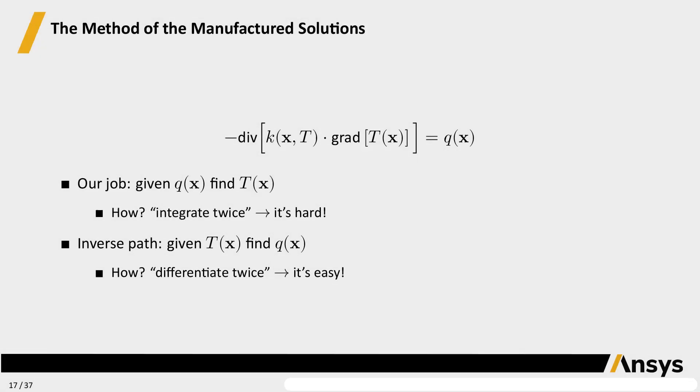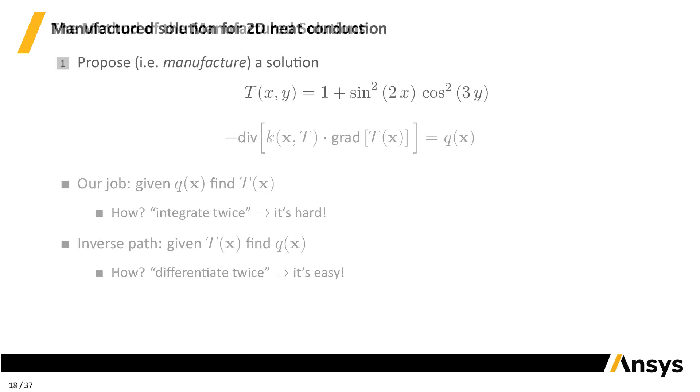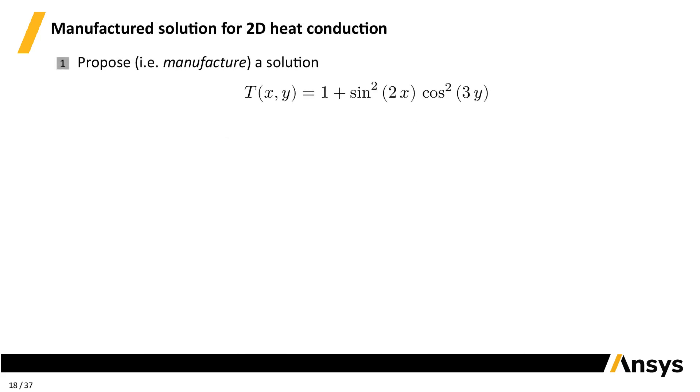But we can take the inverse path: start with a known temperature distribution and find out which source and boundary conditions we need to give rise to that manufactured solution we started from. Mathematically, this means carrying out two derivatives. And derivatives are far easier than integrals. Even more, we can use a symbolic mathematical manipulation tool to do the differentiation for us.